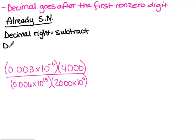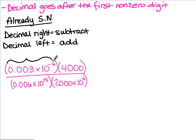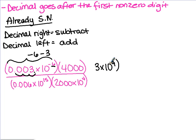And if the decimal moves left, you're going to add that number to the exponent. For example, let's deal with .003 times 10 to the negative 6. The decimal needs to go after the first non-zero digit, which is after the 3. To do that, we move it 1, 2, 3 places. It was already in scientific notation; we moved it 3 places to the right, so we are subtracting that number from the exponent, negative 6.